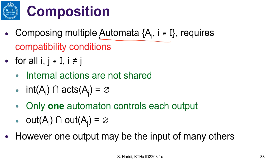When we compose multiple automata together to form one automaton, we have some restrictions on the signatures of the different component automata. The first condition is that internal actions are not shared — the intersection of the internal actions of any component automaton with the actions of any other automaton should be disjoint. The second condition is that only one automaton controls each output, so the output actions of any component automaton I should be disjoint from the output actions of any other automaton. However, one output may be the input of many others, and that is how we connect component automata together.